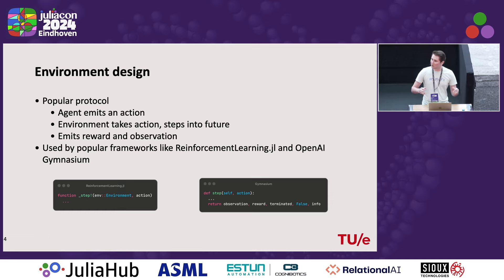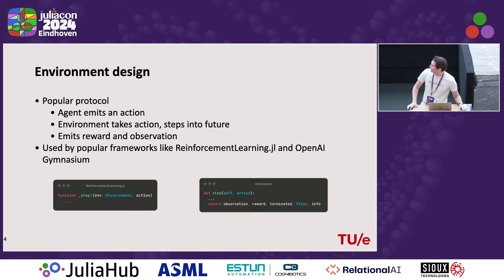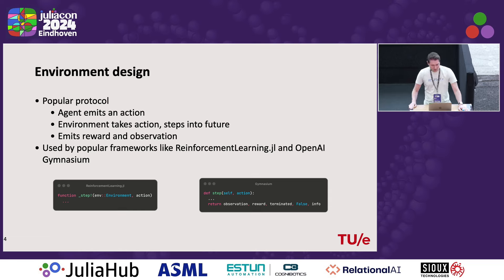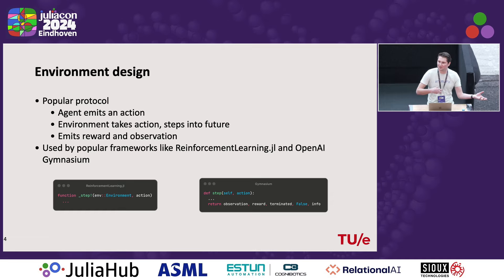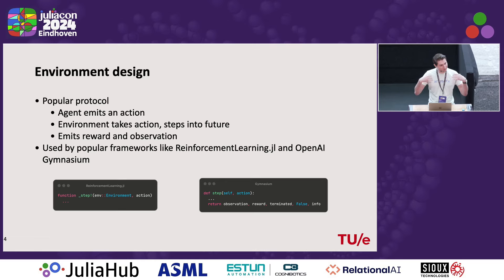This protocol is used by both ReinforcementLearning.jl and OpenAI Gymnasium. As you can see in the function signatures from both these packages, there is no notion of the time step, of different agents, or anything like that. It's just: we have the environment, we have one action, and that's the only protocol we have — the only thing we can use to let the environment step forward in time.